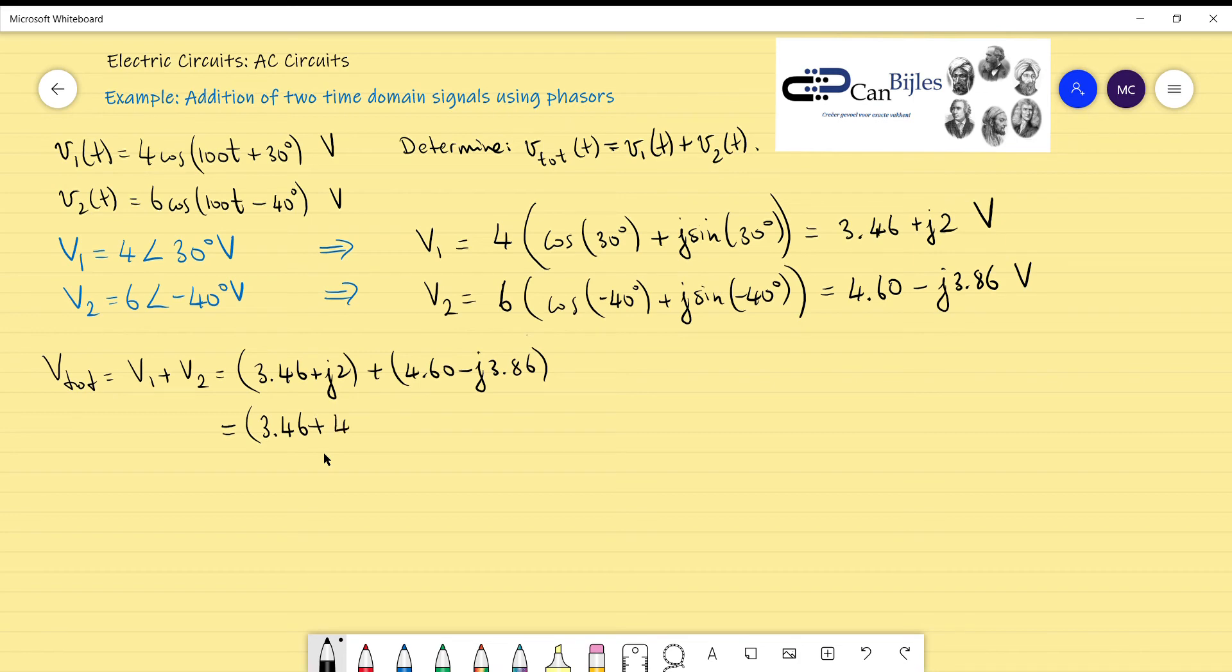So 3.46 plus 4.60, that's actually the addition of the real parts. For the imaginary parts of course I get 2 minus 3.86. Now what you get, that's just V_total, so what you get is 8.06 and minus 1.86 volts.